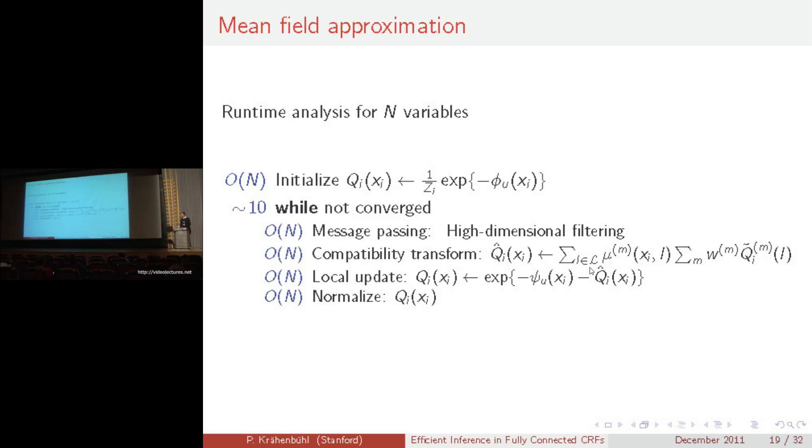We can also do learning using high dimensional Gaussian filtering. We can learn both the label compatibility function mu and the weights of the kernels using a filter. However, learning the shape of the kernel leads to non-Gaussian convolution, which cannot be computed with a filter. For more details on that, I would like to refer you to our paper.